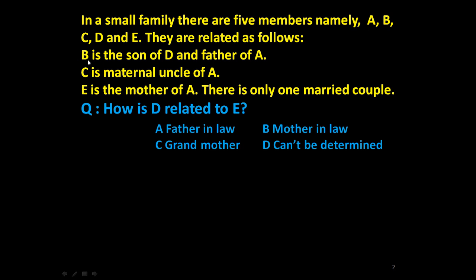First statement is B is son of D and father of A. Means there are three generations B, D and A. Just you incorporate it here. B is the son of D and father of A. Here it is not clear whether D is a male member or female member, or whether A is a male member or female member. But B is a male member. So here this information only you can draw from this statement.